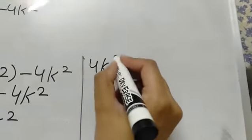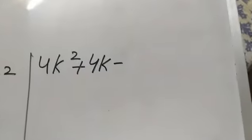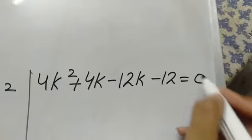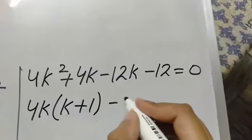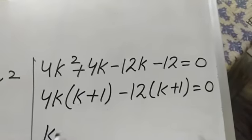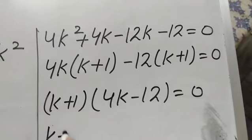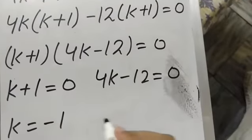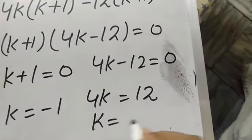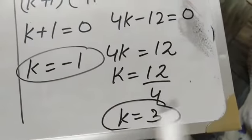Writing it out: 4k squared plus 4k minus 12k minus 12 equals 0. We take 4k common from the first two terms, giving 4k(k plus 1), and minus 12 common from the last two, giving minus 12(k plus 1). Now k plus 1 is common, so we get (k plus 1)(4k minus 12) equals 0. If k plus 1 equals 0, then k equals minus 1. And if 4k minus 12 equals 0, then k equals 3.